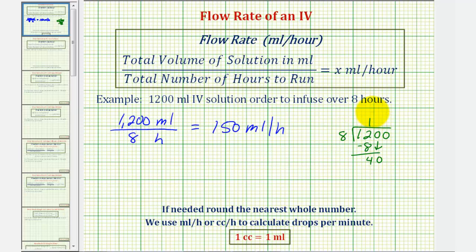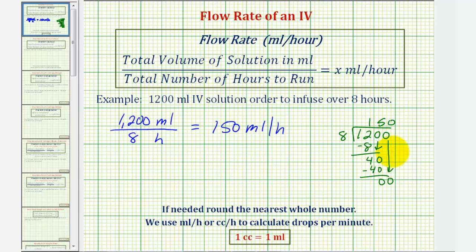There are five eights in 40. Five times eight is 40. Subtract — this difference is zero. We have one more digit to bring down, and there are zero eights in zero. Zero times eight is zero. Subtract, and the remainder is zero.